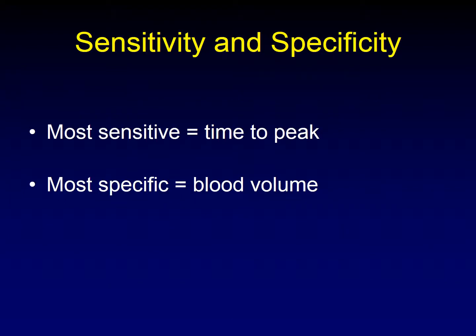Carrying that theme further, the most sensitive of our parameters is time to peak — that's the one that's going to go bad first and will first show abnormal perfusion. The most specific parameter is blood volume — it's the last to go. So you expect time to peak to become abnormal first, then cerebral blood flow, then cerebral blood volume, as you get more and more occluded proximal to the area you're measuring.